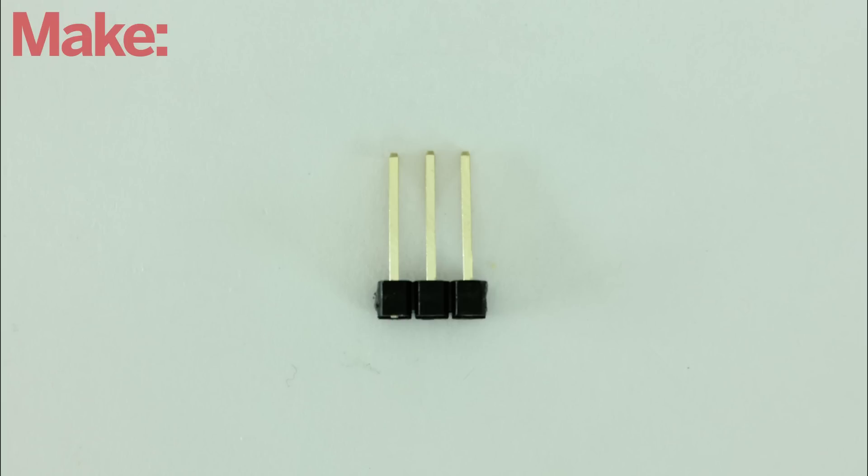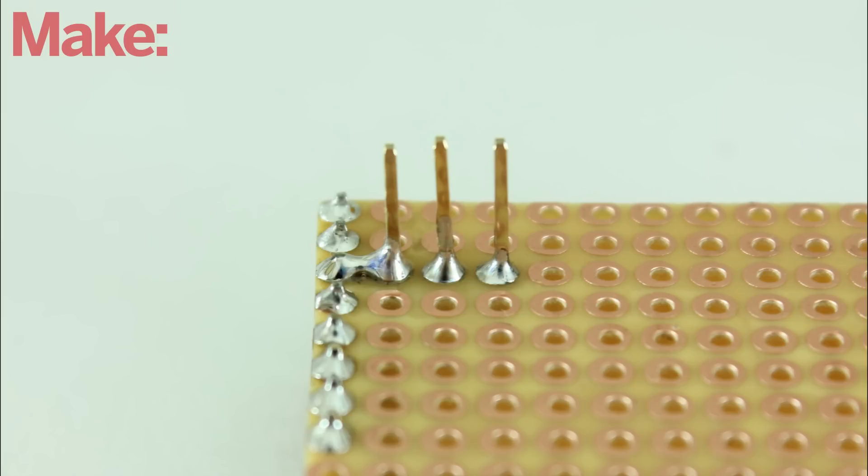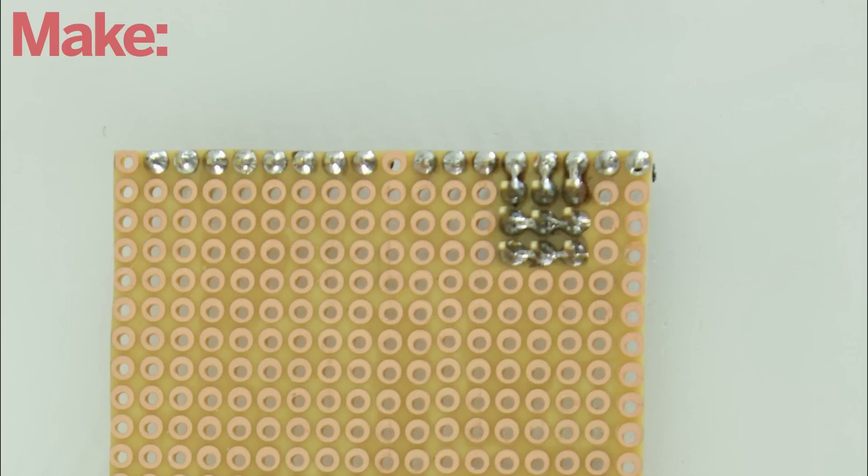To attach them to the board, we're going to use a set of three header pins for each servo. Solder these to the board just below the digital pins. The top pin of each set will be for the signal wire and will be connected to the adjacent digital pin.